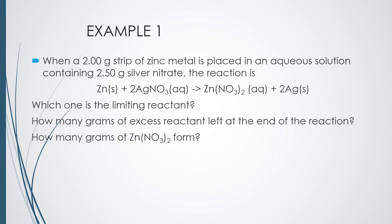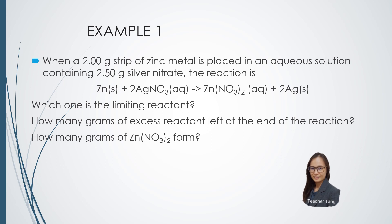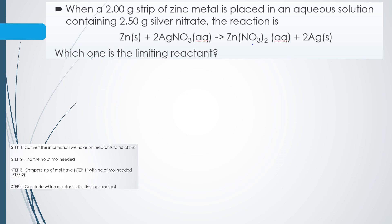Now we shall look at another example. In this question, 2 grams of zinc metal reacts with 2.5 grams of silver nitrate. You are asked to determine which one is the limiting reactant, how many grams of excess reactant are left at the end of the reaction, and how many grams of product zinc nitrate is formed. The first part is to determine which is the limiting reactant: zinc metal or silver nitrate.